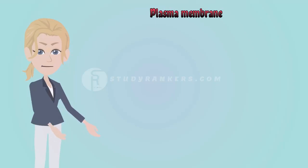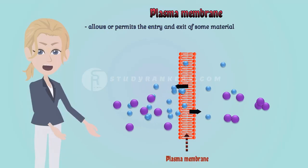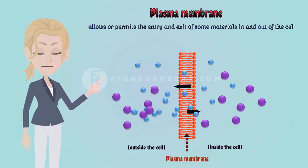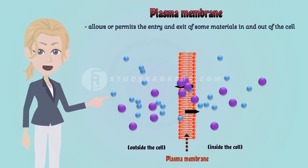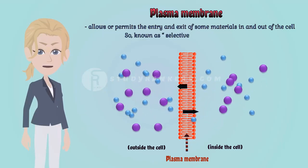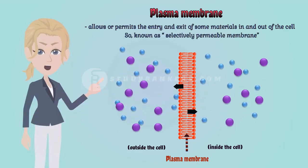The plasma membrane allows or permits the entry and exit of some materials in and out of the cell, so they are known as selectively permeable membranes.